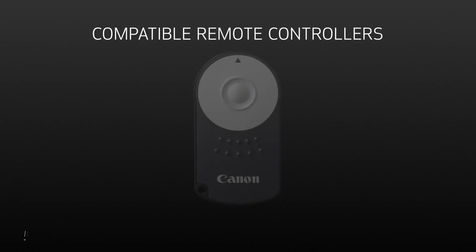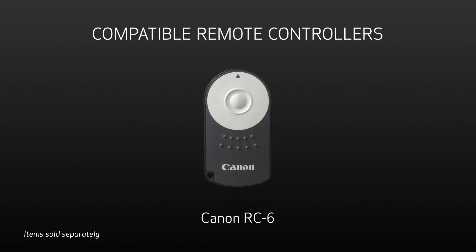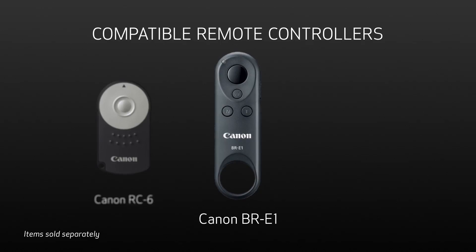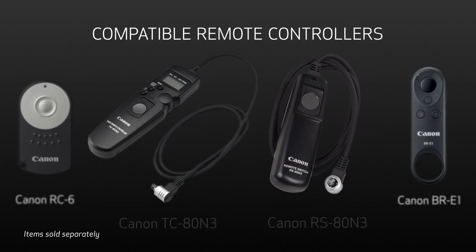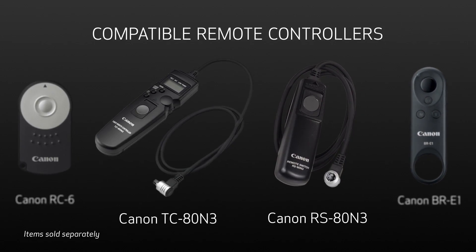Another option is to use Canon's optional RC6 infrared remote controller. This little device allows you to start and stop video recording from up to about 15 feet from the camera. Similarly, there's an optional Canon BR-E1 Bluetooth remote controller that can let you remote control the camera from similar distances. The difference with the BR-E1 is that since it uses Bluetooth technology and not infrared, you can be anywhere within about 15 feet of the camera — including behind it — and reliably start and stop video operation. And finally, there are traditional optional wired remote controllers.